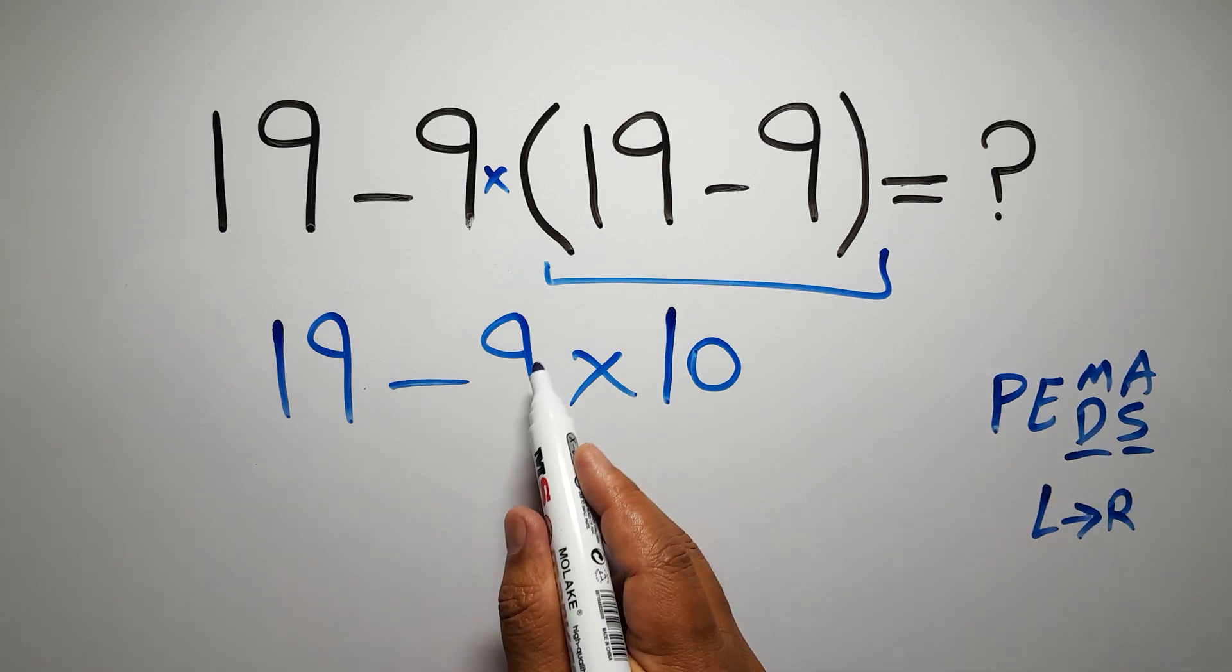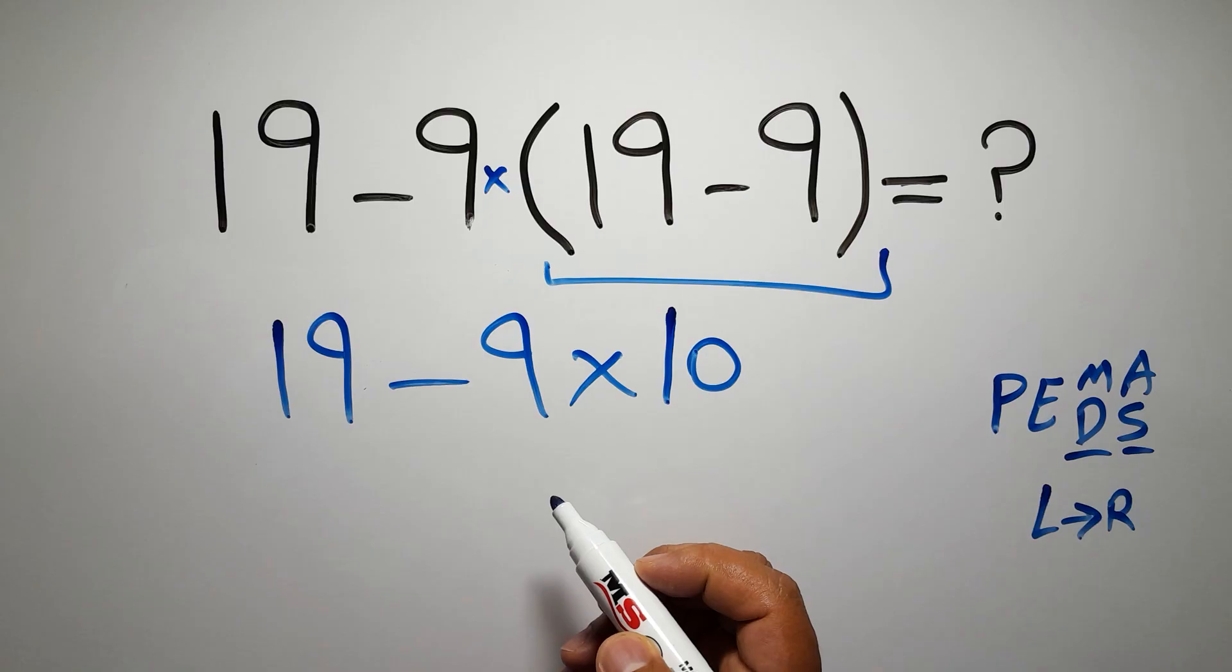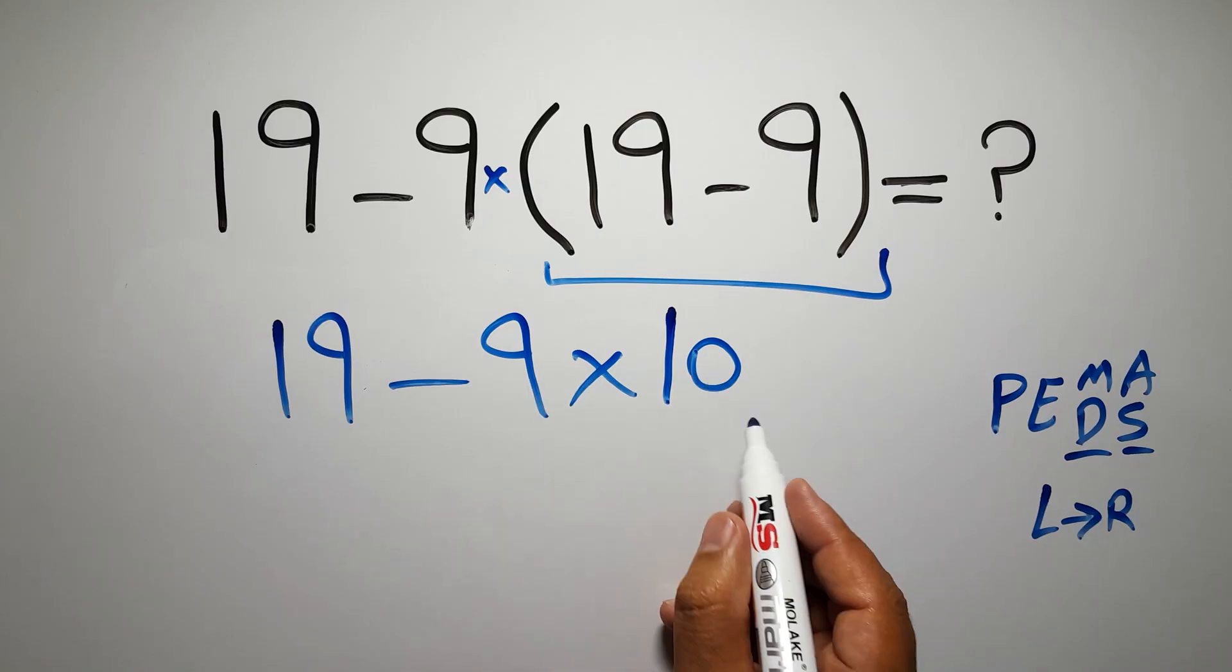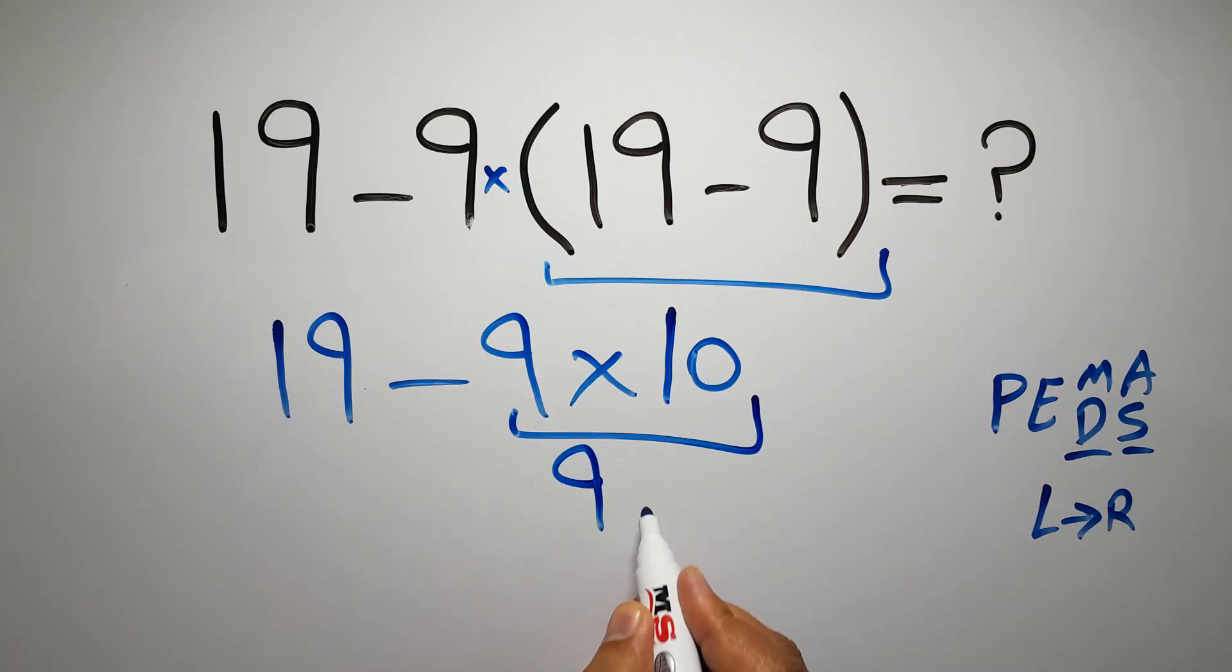So here first we have to do this multiplication. 9 times 10 is just 90. So 19 minus 90, which equals negative 71.